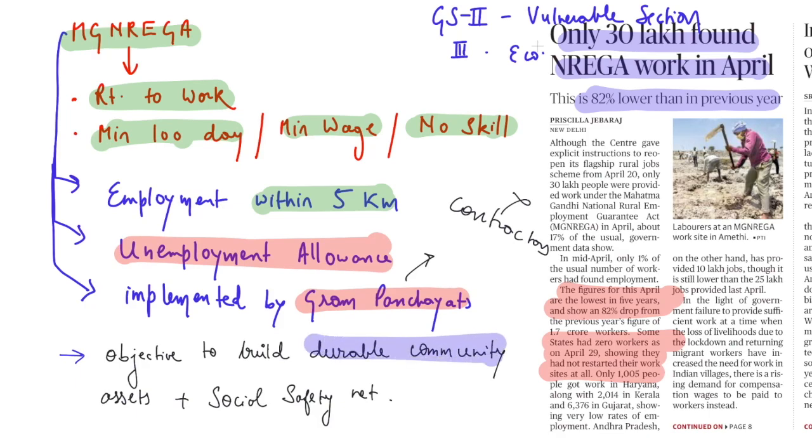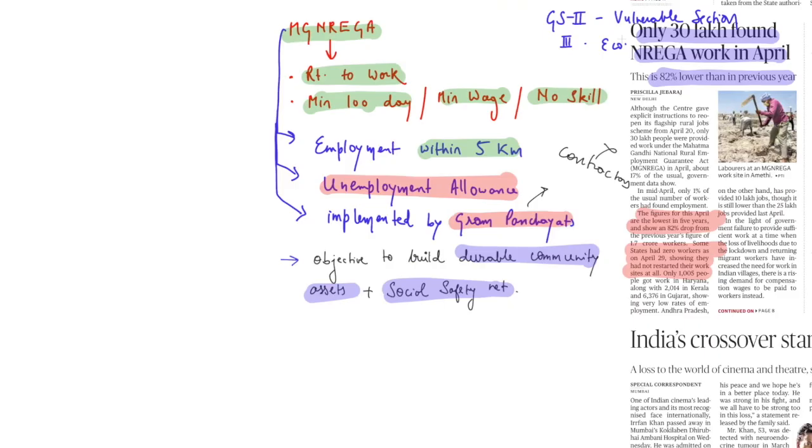First of all, durable community assets will be built into the rural areas which could be used by all the members of a society. And then as wages are being provided, it is providing a social safety net to the people who are living into the rural areas. Moreover, with this scheme, we are able to implement two of the directive principle of state policy that is article number 41 and article number 40.